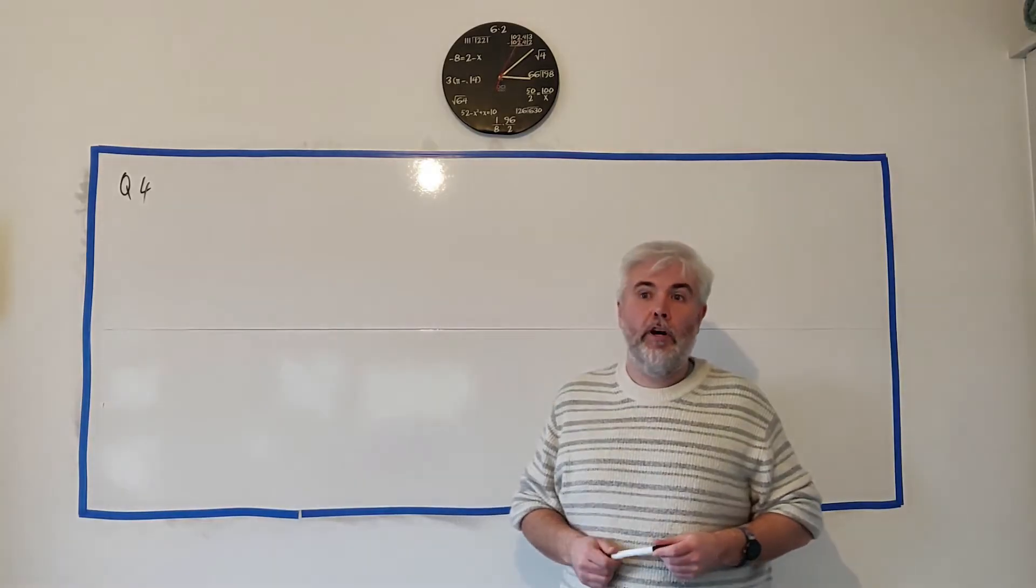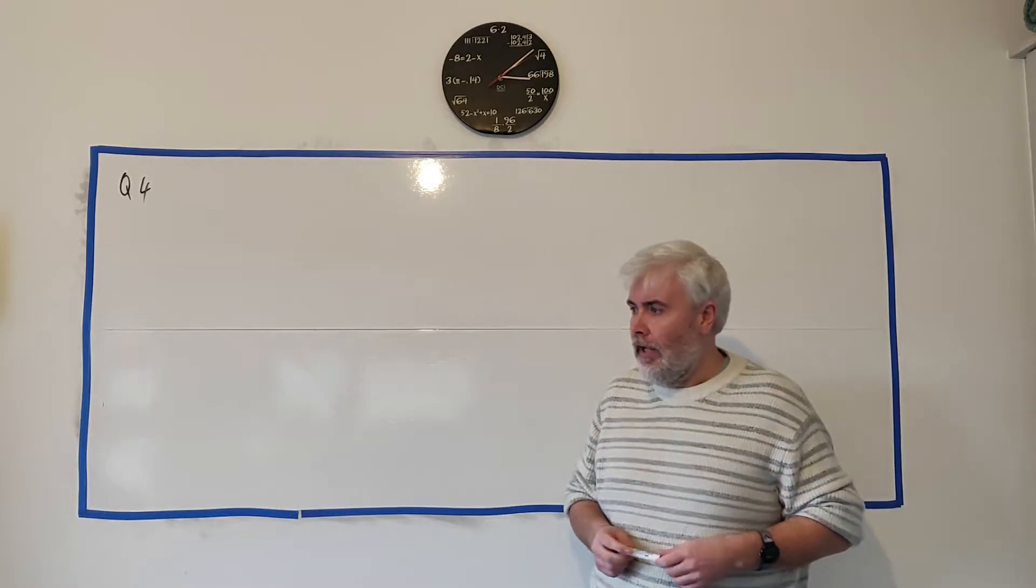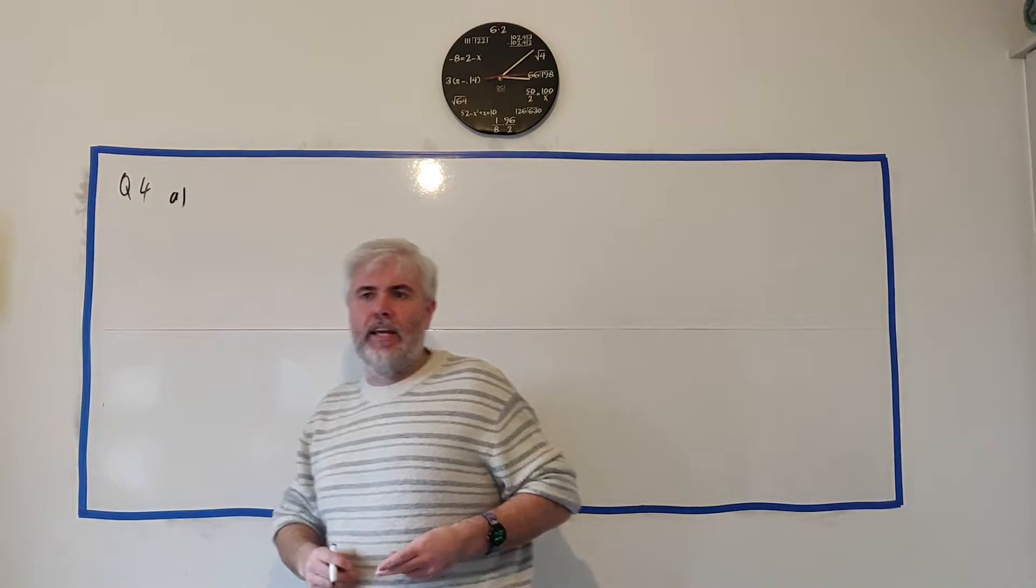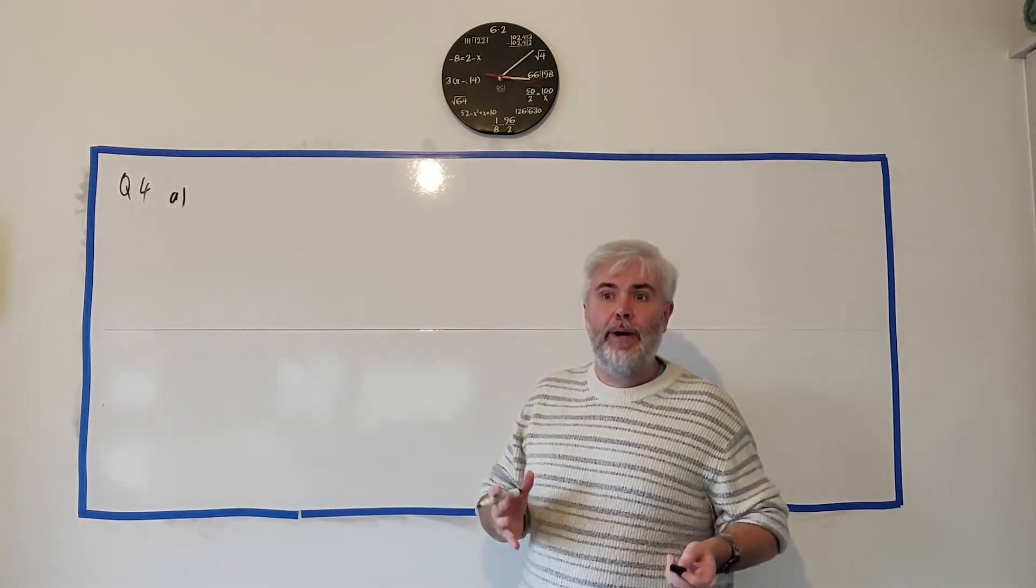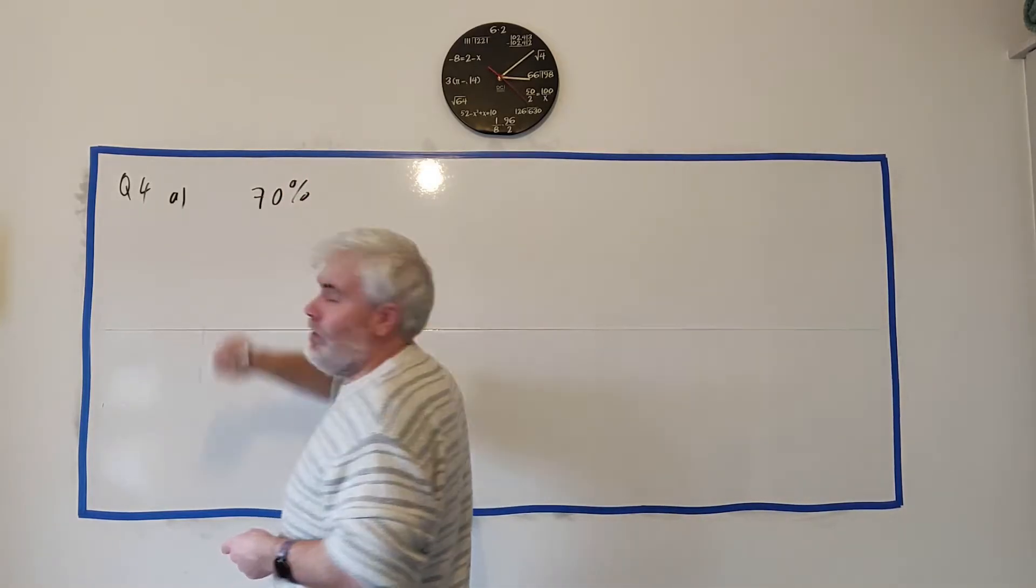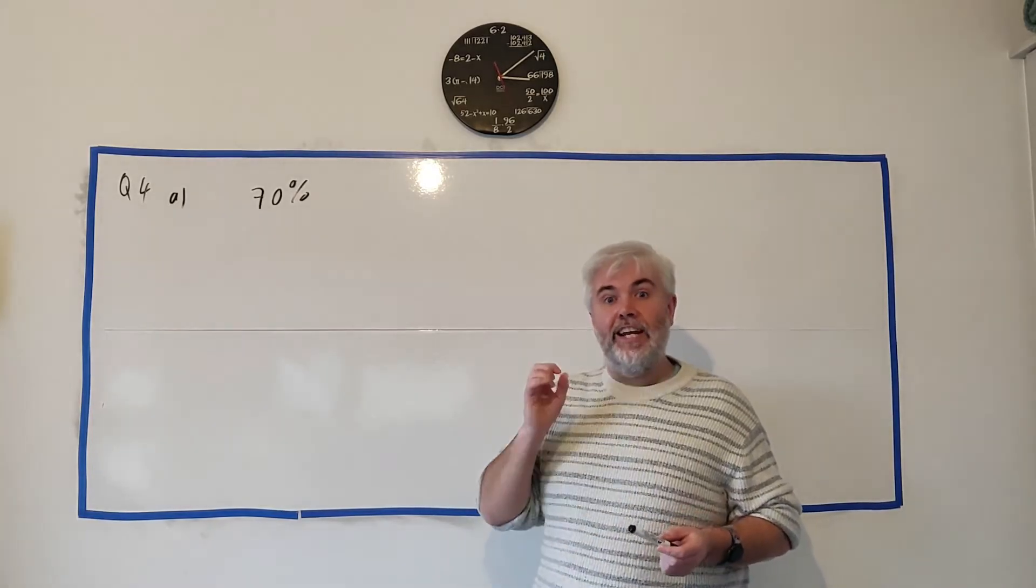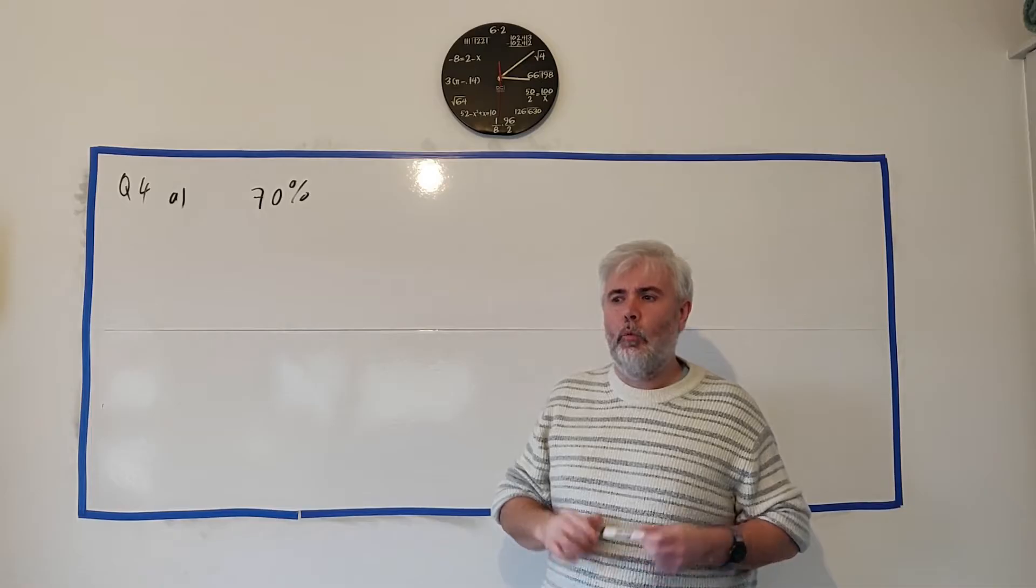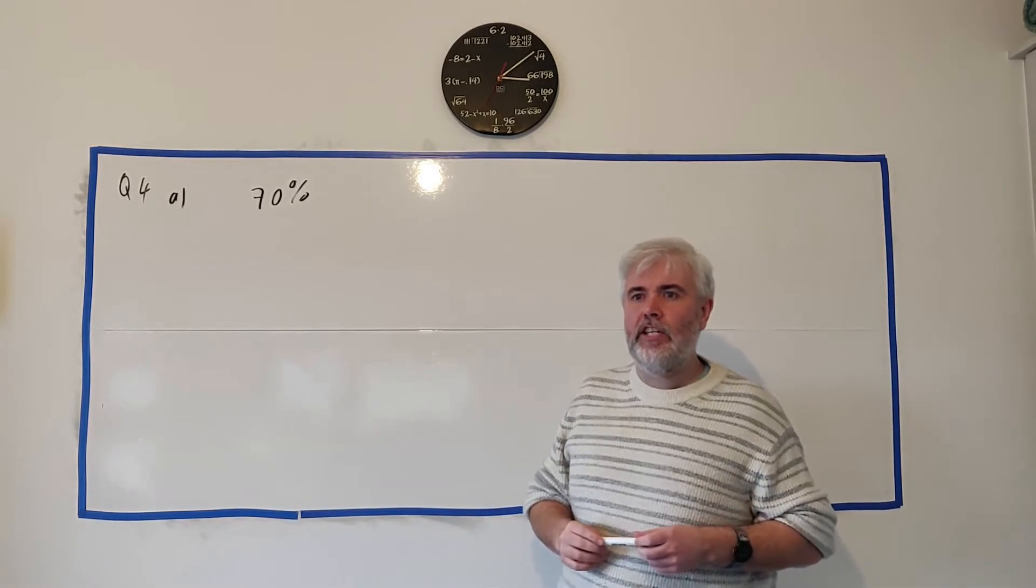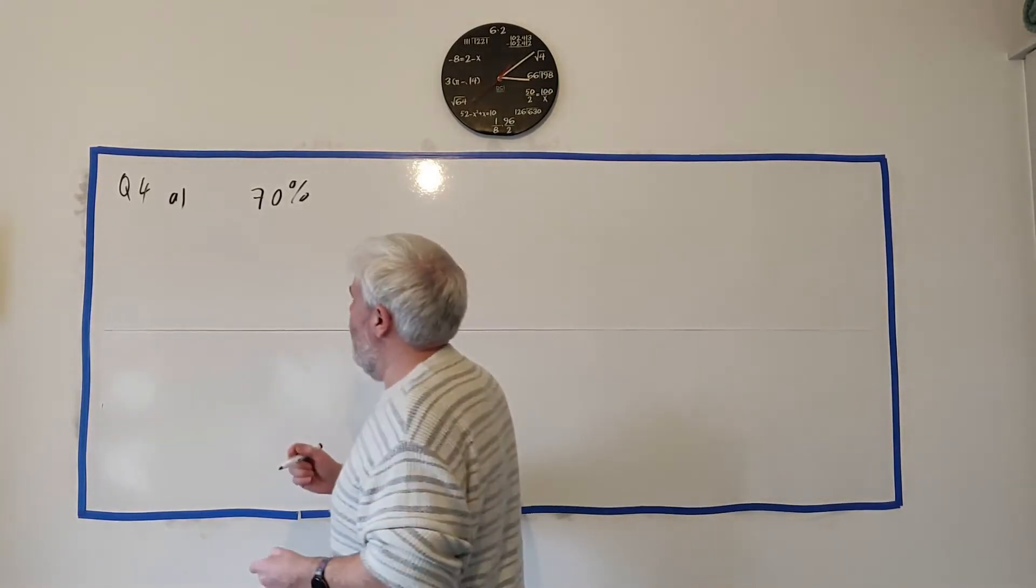This is question four from paper two and this question is about probability, a little bit of counting and then some averages. In part A of the question they give us a person named Rohan and he's a basketball player. They tell us that he scores 70% of his free throws on average. They also tell us to assume that the free throws are independent. Now that means that one throw does not affect the next one and it says find the probability that he scores his first three free throws.